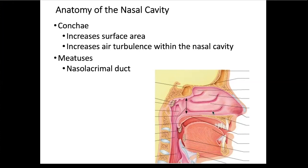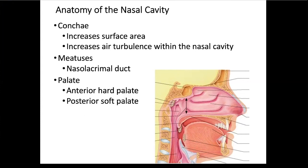Emptying into the inferior meatus is the nasolacrimal duct, which carries tears from your eye. When you are crying, your nose will drip because tears move into your nasal cavity. The palate, as mentioned before, consists of a hard palate, which is bone, and then the soft palate at the posterior end, which is muscle covered in mucosa.